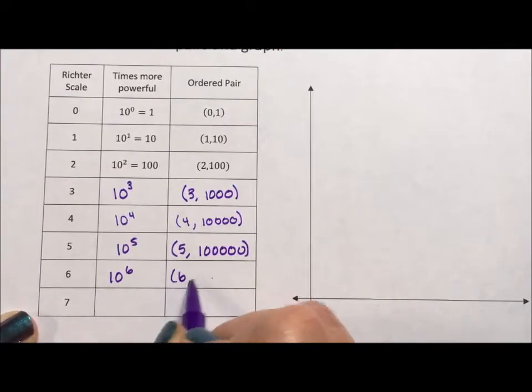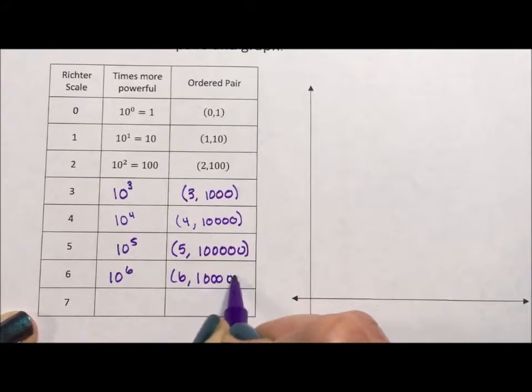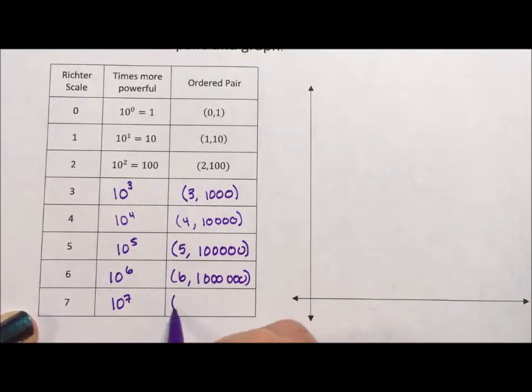If it's a 6, this is going to be a million. And if it's a 7, it is 10 million.